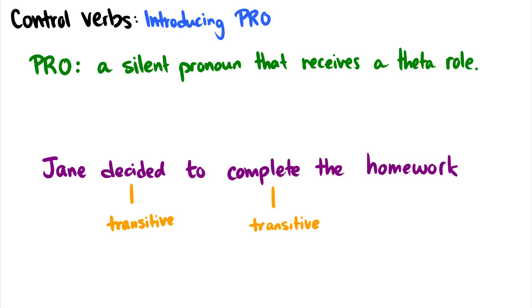In this video, I'm going to introduce control verbs, and these are different from raising verbs in one way. The agents or subjects will end up getting two theta roles instead of one theta role, which means that we need something new in order to deal with that. So we're going to introduce this big PRO, which is a silent pronoun that receives a theta role. But first, let's take a look at an example sentence and see why we need this and how control verbs are actually different from raising verbs.